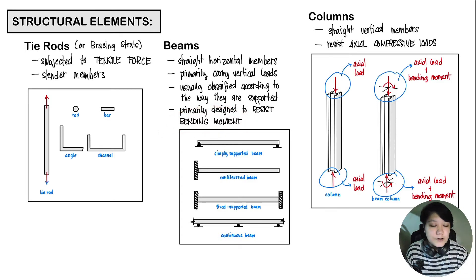The third one is our columns. These are typically your straight vertical members. They resist axial compressive loads. This is a sample of our column. The loading is placed axially on our columns. But we also have something that is called beam columns, where it not only resists axial loads, it also resists some bending moment.